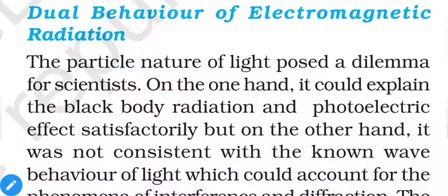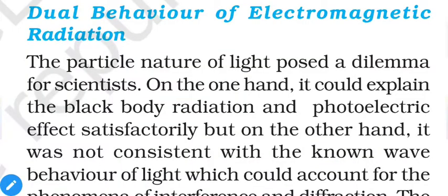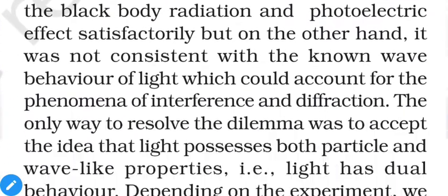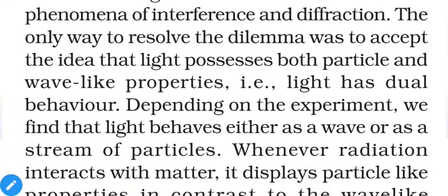In this lecture we will discuss about the dual behavior of electromagnetic radiation. The particle nature of light posed a dilemma for scientists: on one hand it could explain blackbody radiation and the photoelectric effect satisfactorily, but on the other hand it was not consistent with the known wave behavior of light, which could account for the phenomena of interference and diffraction — already discussed in earlier lectures.